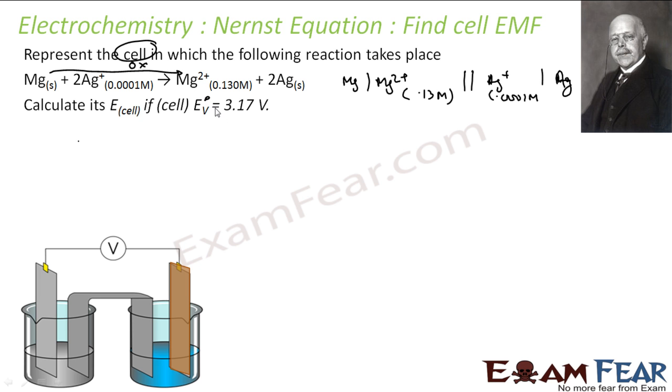Now define the E cell if standard E° is 3.17 V. We know that E cell is nothing but E° cell minus RT by NF ln K. Let's put the value. E° cell is 3.17 V minus RT by NF. Since these are happening at 298 Kelvin, assuming standard temperature, this becomes 0.059 by N. And N is two electrons because two electrons are getting transferred here.